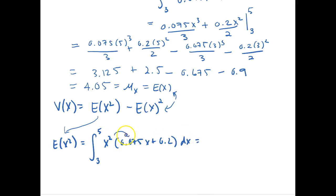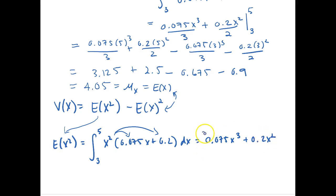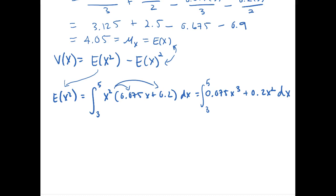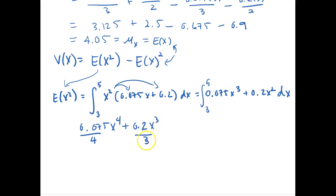Distributing x squared through, we get 0.075x cubed plus 0.2x squared, and we take the integration of this from 3 to 5 with respect to x. Integrating gives 0.075 divided by 4 times x to the 4th plus 0.2x cubed divided by 3, evaluated from 3 to 5. Plugging in the numbers, we get a value of 16.733.